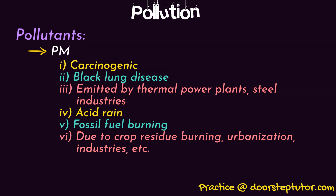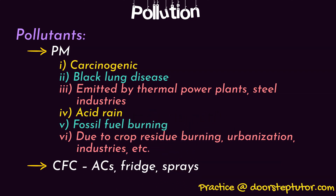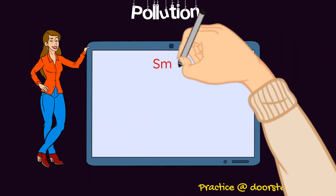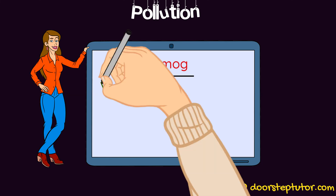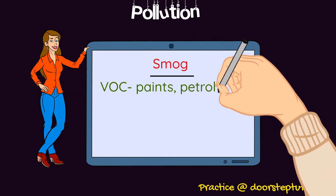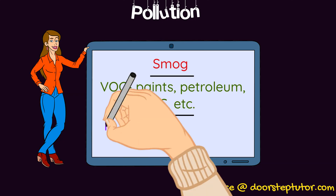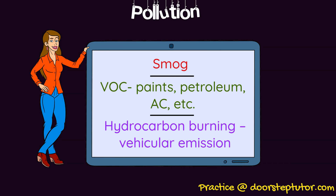The second kind of pollutant is CFC, which is usually found in air conditioners, refrigerators, and sprays. The third kind is smog, which is smoke plus fog. Next is volatile organic compound (VOC), which is found in paints, petroleum, air conditioners, and hydrocarbon burning due to vehicular emission. These all contribute to air pollution.